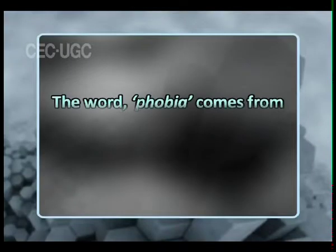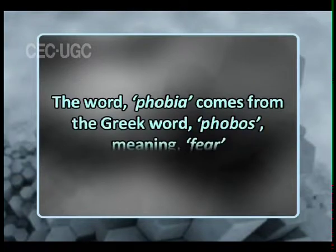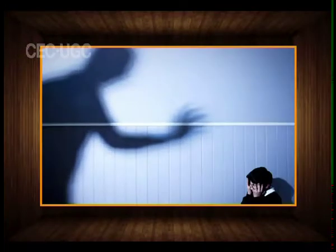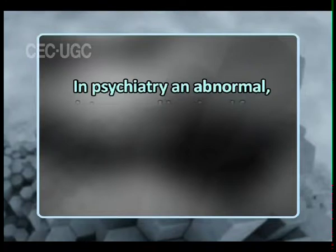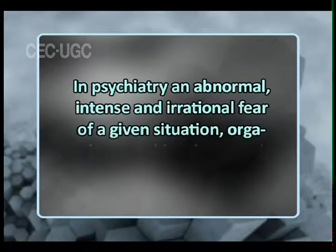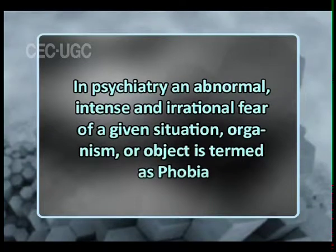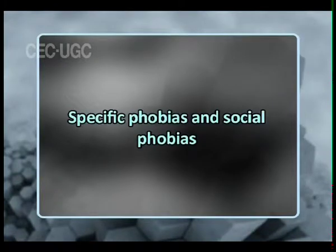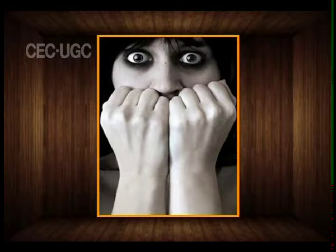Then phobias: the word phobia comes from the Greek word phobos, meaning fear. A phobia, when used in the context of clinical psychology, is a type of anxiety disorder usually defined as a persistent fear of an object or situation. In psychiatry, an abnormal, intense, and irrational fear of a given situation, organism, or object is termed a phobia. The term is usually discussed in terms of specific phobias and social phobias. A specific phobia is a marked and persistent fear of an object or situation which brings about an excessive or unreasonable fear when in the presence of, or anticipating, a specific object.